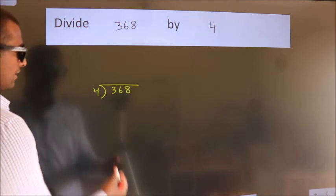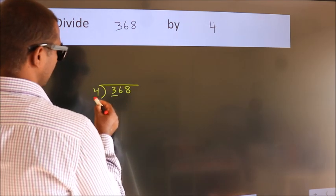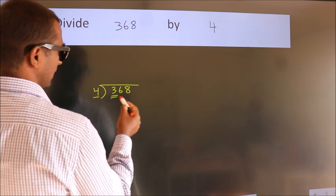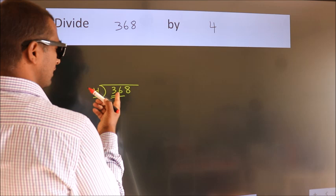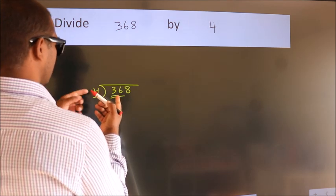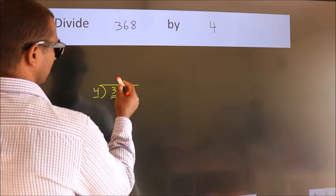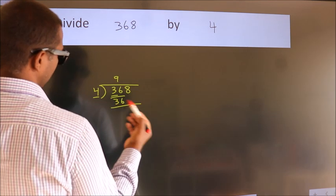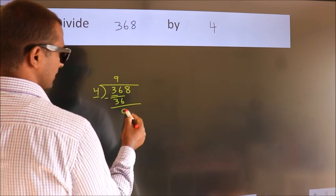Next, here we have 3. Here 4. 3 is smaller than 4, so we should take 2 numbers: 36. When do we get 36 in the 4 table? 4 nines, 36. Now we should subtract. We get 0.